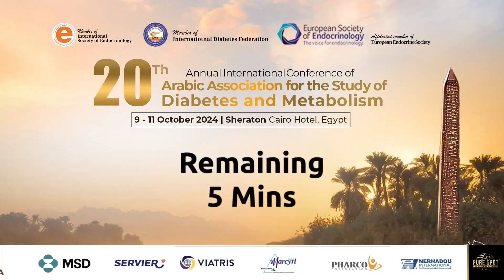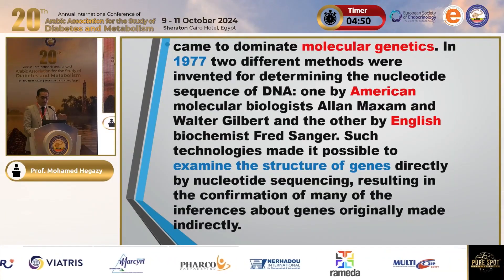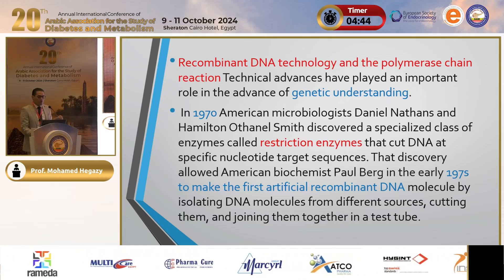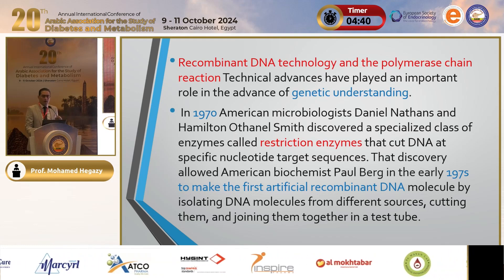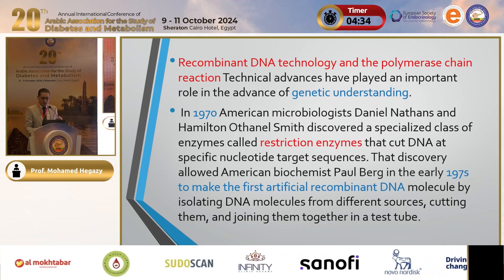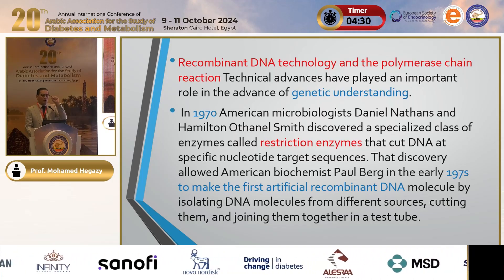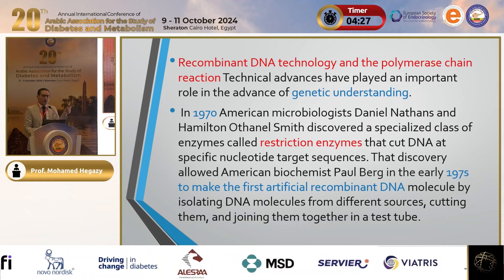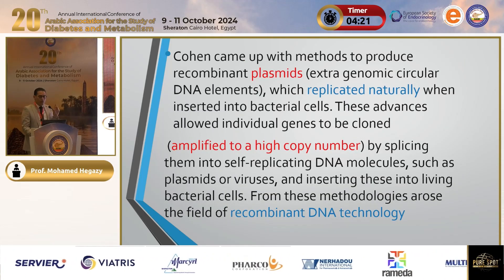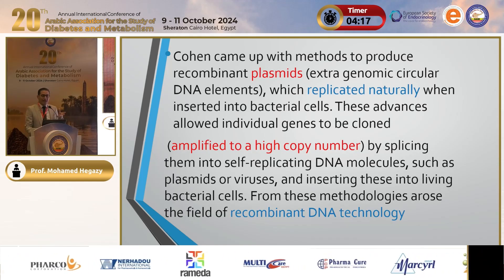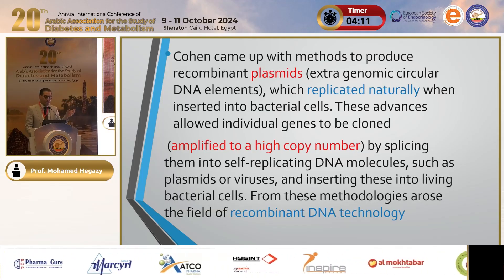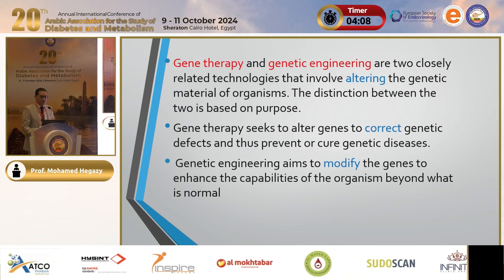In molecular genetics, in 1977, researchers examined the structure of genes — a cornerstone for recombinant DNA technology and polymerase chain reactions (PCR), which facilitated genetic understanding. In 1970, restriction enzymes were identified as important tools that can cut specific sequences of DNA for study. PCR allows multiple copies of a gene to be replicated, modified, and studied.